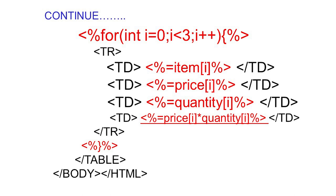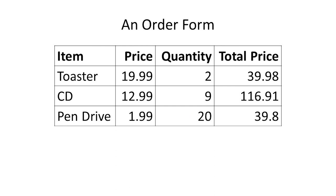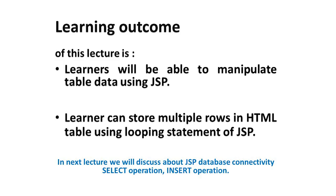This is the output of this program. Accordingly TR closes, the for loop closes, then the table, body, and HTML are all closed. After learning this lecture, the learner will be able to manipulate table data using JSP and store multiple rows in an HTML table using looping statements in JSP. In the next lecture, we will discuss JSP database connectivity — select operation and insert operation. Thank you, learner.